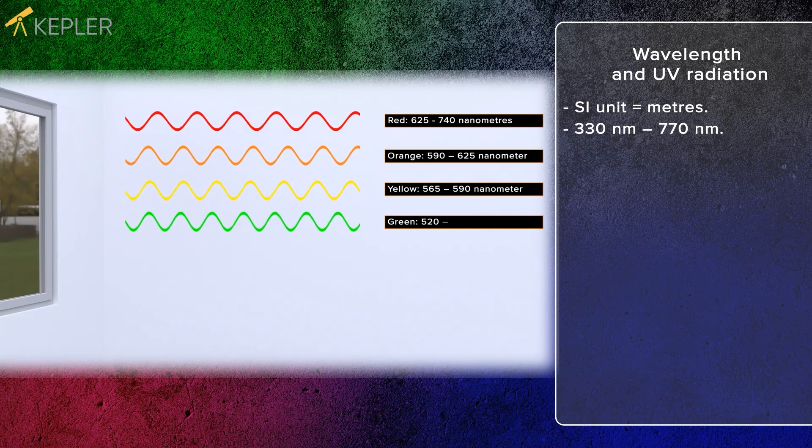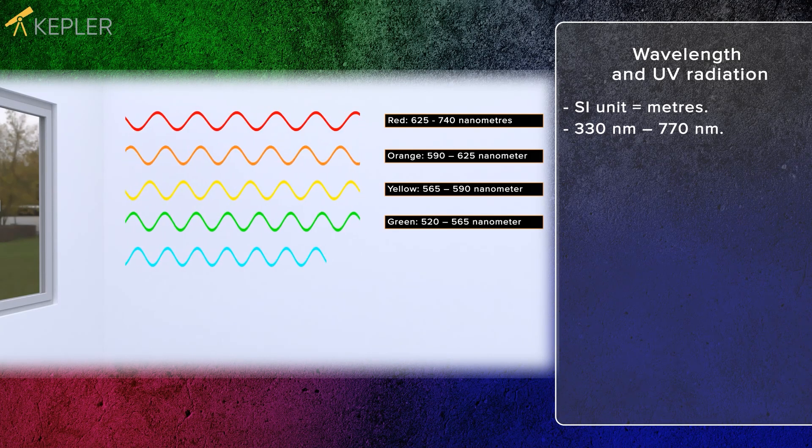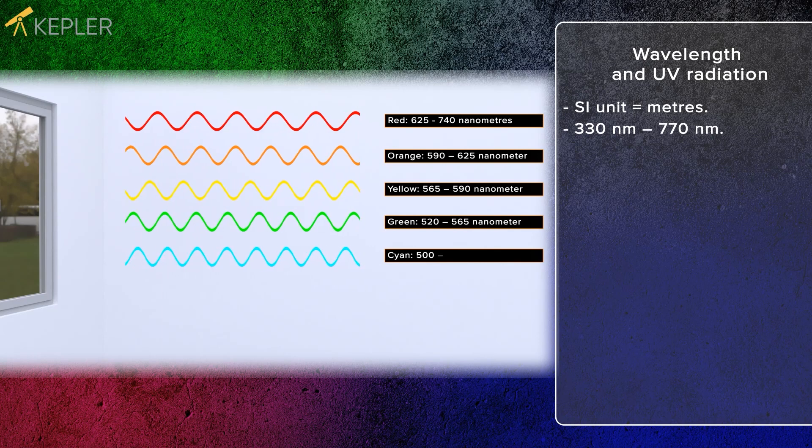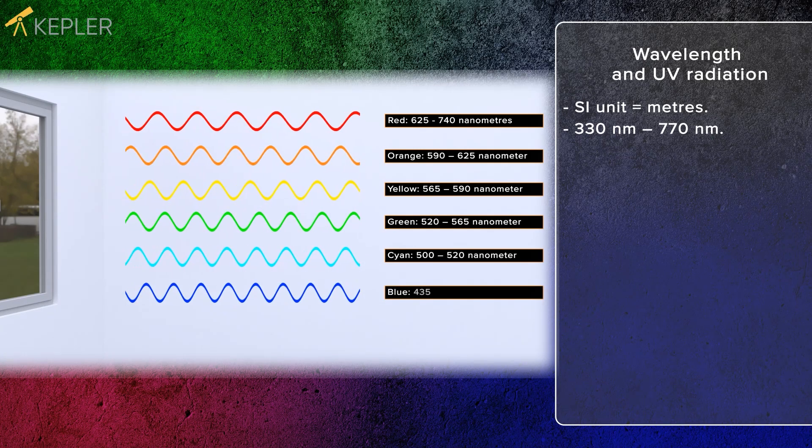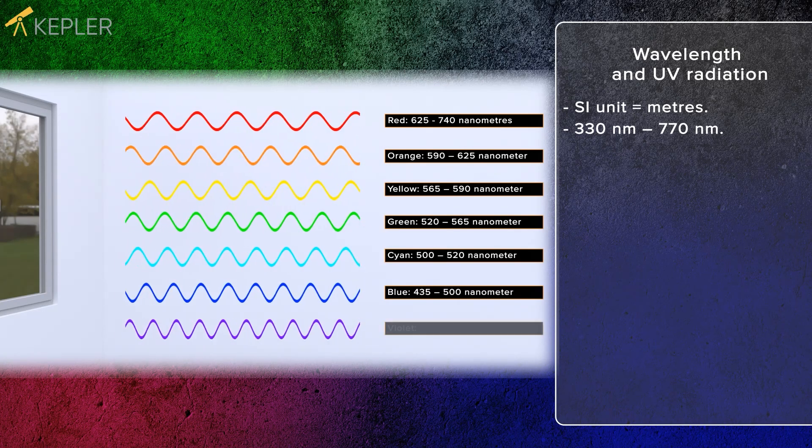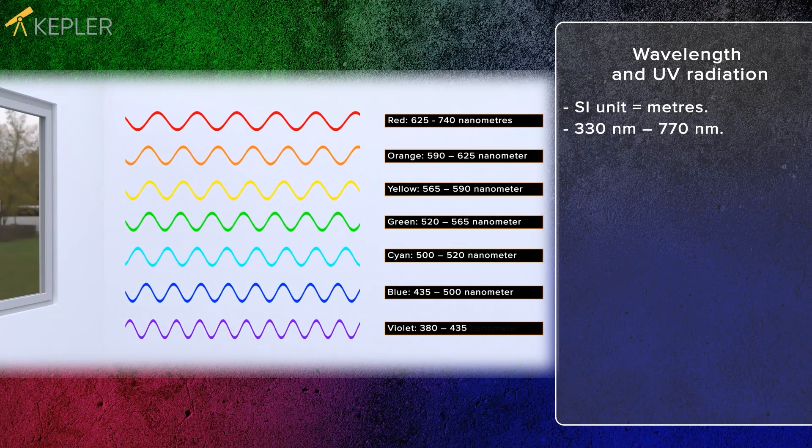Cyan is 500 to 520 nanometers, blue is 435 to 500 nanometers, and violet is 380 to 435 nanometers. White light consists of all colors.